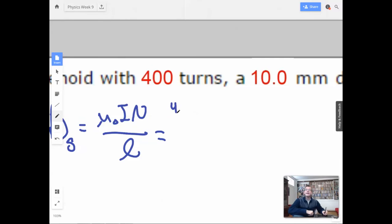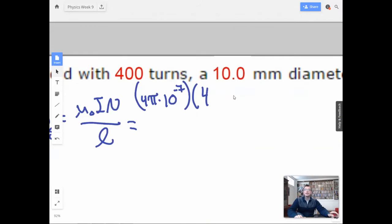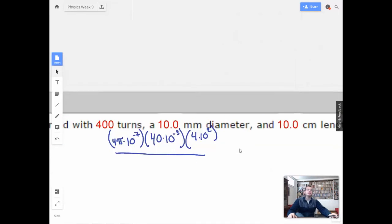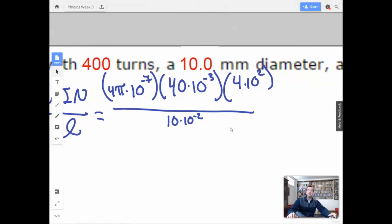Mu naught, 4 pi times 10 to the negative 7th. Current is 40 times 10 to the negative 3rd. Turns is 4 times 10 to the 2nd. And then length, as stated earlier, was 10 centimeters. So it's 10 times 10 to the negative 2nd of meters. So 7 minus 3 is negative 10, plus 2 is 10 to the negative 8th. And then we have this, which makes it 10 to the negative 7th again. So we have a 2 and the 2 cancel out.